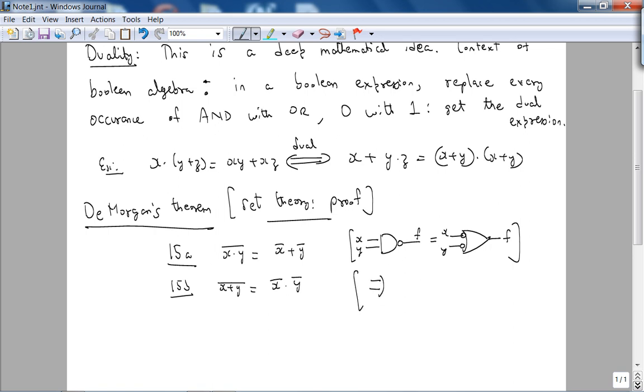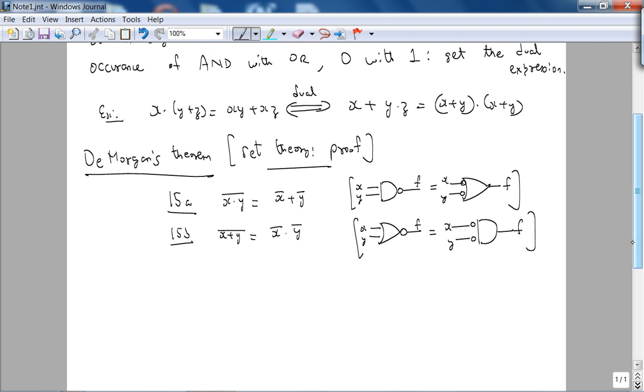And this one, consequently, is if I have a NOR gate, it equals basically pushing the NOT through but changing the shape of the gate right there.